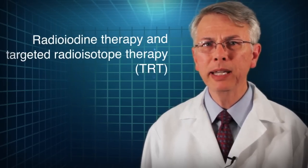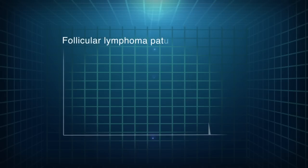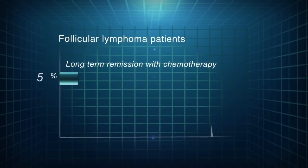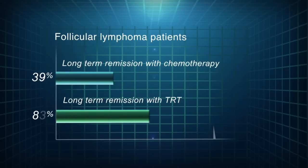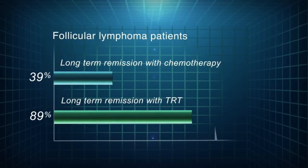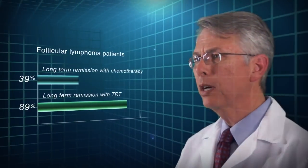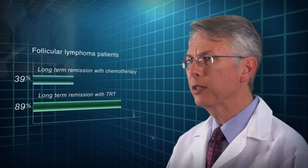Nuclear medicine also includes several types of cancer treatments such as radioiodine therapy and targeted radioisotope therapy, or TRT. TRT is an extremely effective way to treat specific types of lymphomas, providing targeted treatment that affects only the cancer cells without harming surrounding tissues and often leading to long-term remission. This extremely targeted technique is now being investigated for use with other types of cancer.